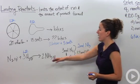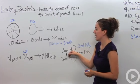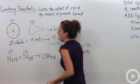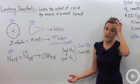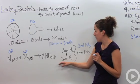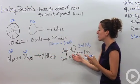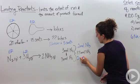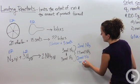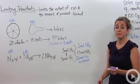You're limited by hydrogen, and nitrogen is your excess reactant. How much nitrogen is left over after the reaction? You used one mole when it reacted with those three moles of hydrogen, so you have two moles of nitrogen left — two moles in excess.